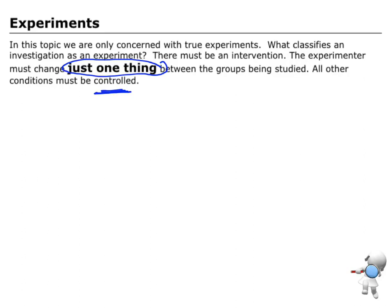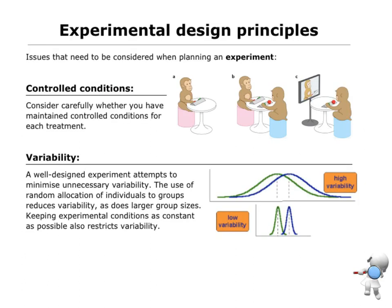Now let's just have a look. We're going to have a look at some design principles of what things that we can do to help control all of these components. So when we plan our experiment, we want to have controlled conditions.